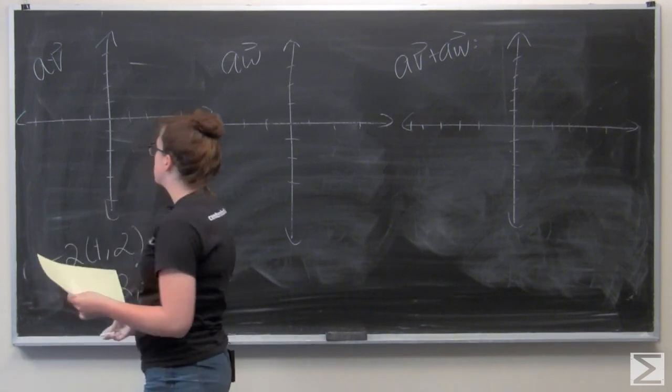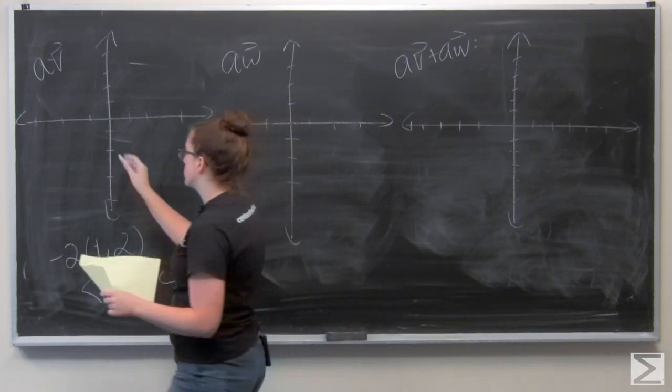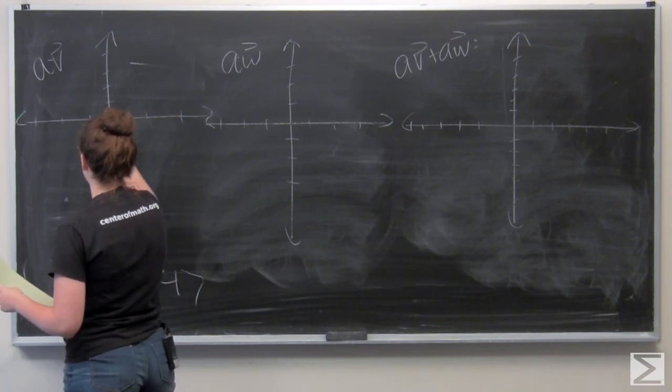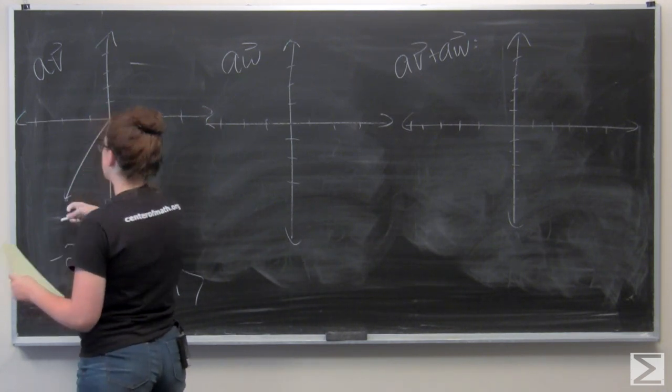So I want to go 2 units in the negative x direction, and then down 4 units. So 1, 2. And again draw it from the origin.